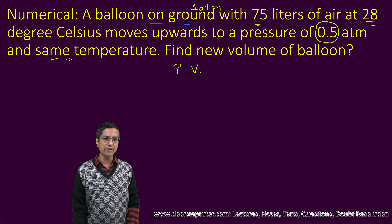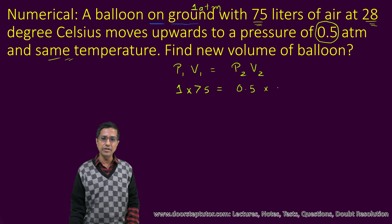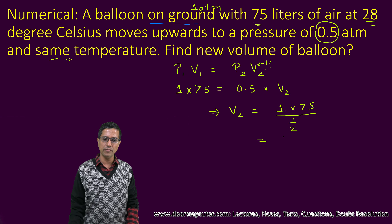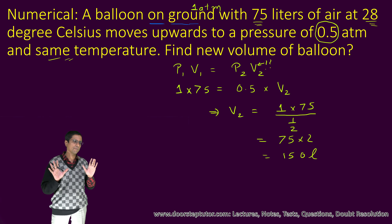Now we know that P1 V1 is equal to P2 V2. The pressure in the first case was 1 atmosphere and the volume was 75 liters. In the second case, P2 is equal to 0.5. We have been asked to find the value of V2. So V2 is equal to 1 into 75, divided by one half — I write 0.5 as half to make our job simple — giving 75 into 2, which comes out to be 150 liters. The unit cannot really change. So that was the first example.